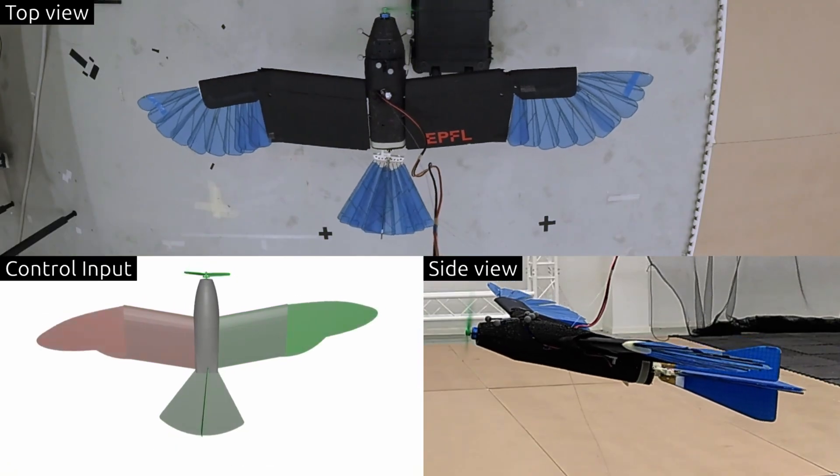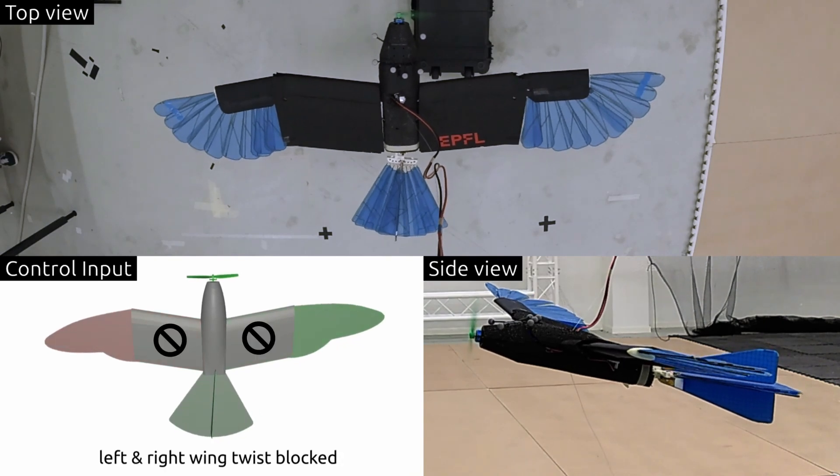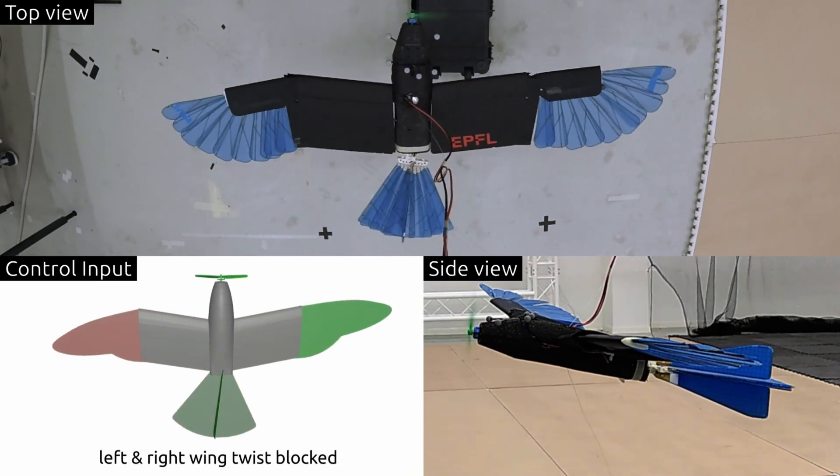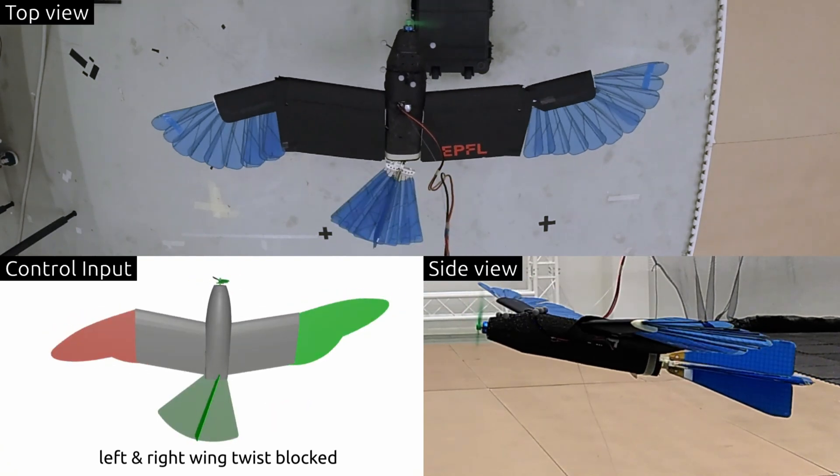Finally, we study the robustness of our method against actuator failure. We block two control surfaces mid-air without the controller knowing, yet it quickly compensates, keeping the drone stable and airborne.